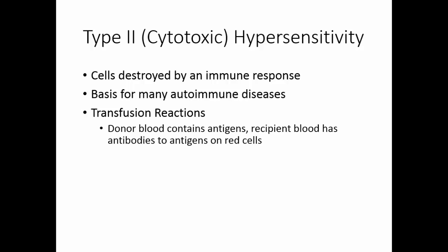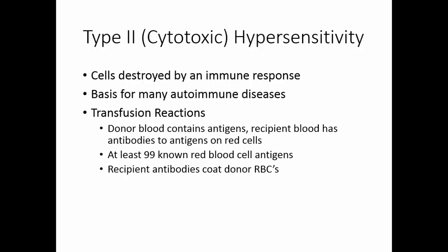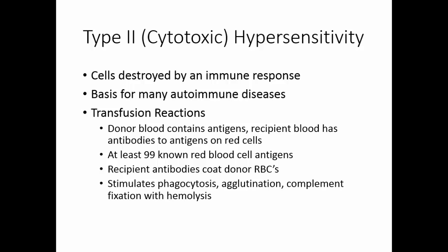This occurs if donor blood contains antigens and recipient blood has antibodies to those antigens. There are at least 99 known red blood cell antigens. While ABO incompatibilities are the most common cause of transfusion reactions, there are a number of other transfusion reactions that can occur. The recipient antibodies will coat the donor's red blood cells. This will stimulate phagocytosis, agglutination, but probably the most important thing that it stimulates is complement fixation. The end product of complement fixation was cell lysis, so the red blood cells will lyse — something we call hemolysis. The treatment is to stop the transfusion.